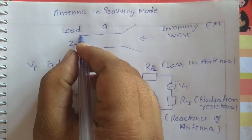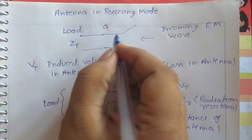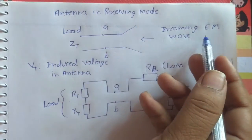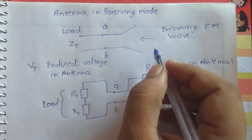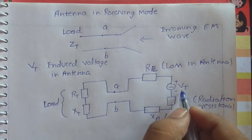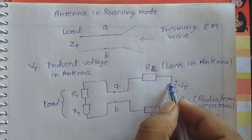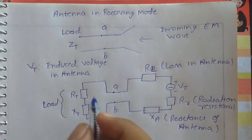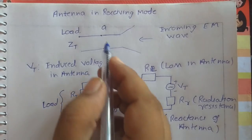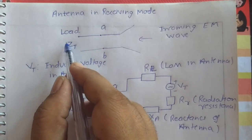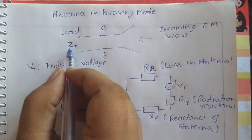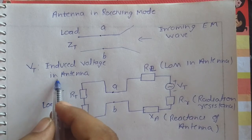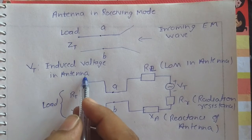In this figure, the antenna is working in receiving mode and an EM wave is coming to the antenna. A voltage VT is induced. The antenna is connected to the load whose impedance is ZT. VT is the induced voltage in the antenna.